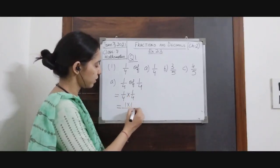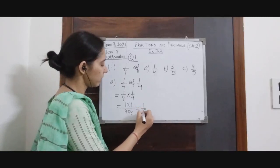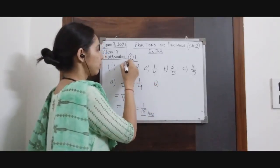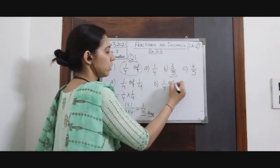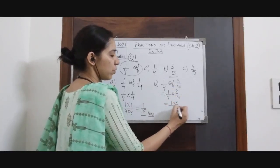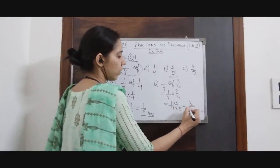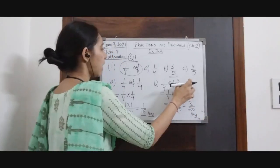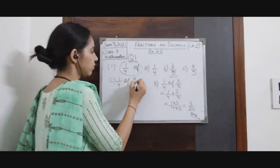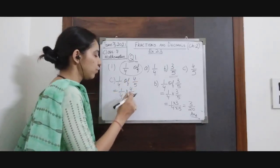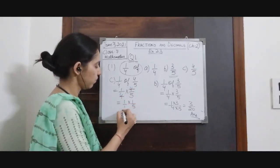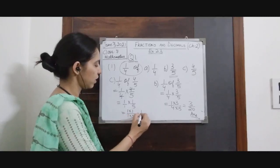Product of numerators divided by product of denominators gives 1/16. This is a proper fraction so this will be the answer. In part B, 1/4 of 3/5 means 1/4 × 3/5. Product of numerators divided by product of denominators gives 3/20. It is a proper fraction so this will be the answer. Similarly in part C, 1/4 of 4/5 equals 1/4 × 4/5. Since 4 appears in both numerator and denominator we cancel it out, giving 1/5 as the answer.